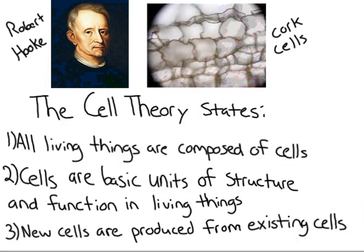The cell theory states three main premises for what a cell is. Number one: all living things are composed of cells. Number two: cells are the basic units of structure and function in living things. Number three: new cells are produced from existing cells.